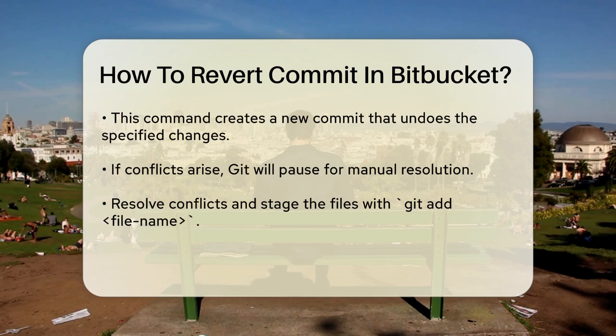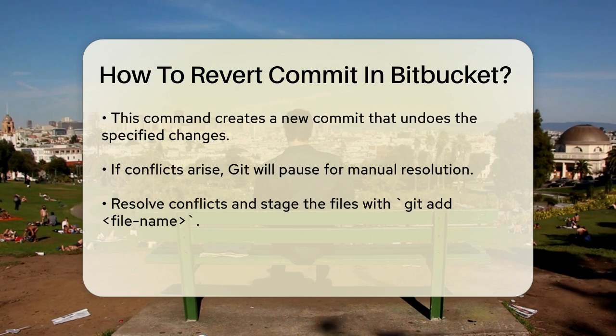Once you've resolved the conflicts, add the resolved files to the staging area using git add <filename>, and then continue the revert process with git revert --continue.